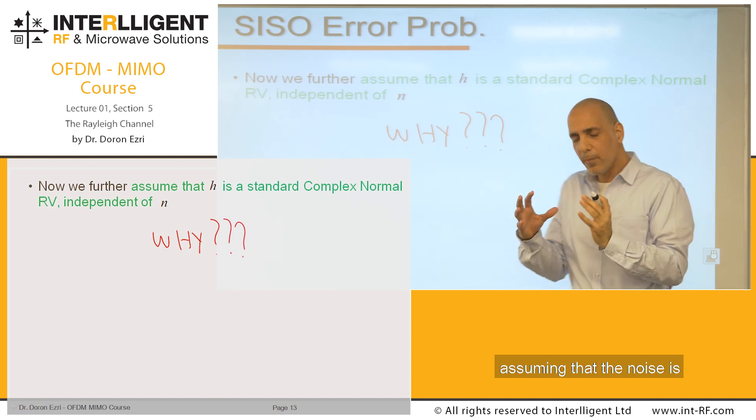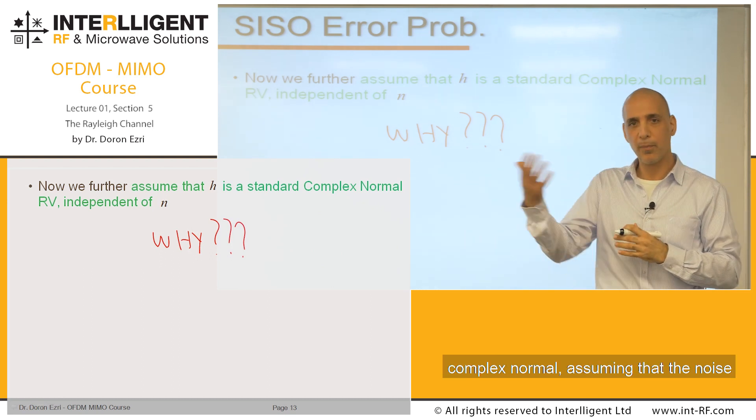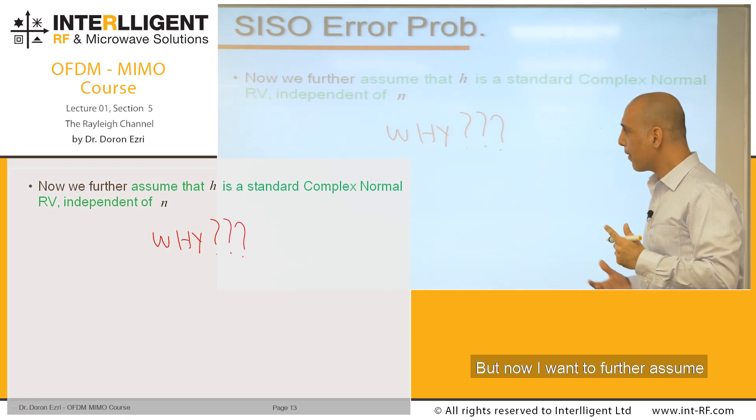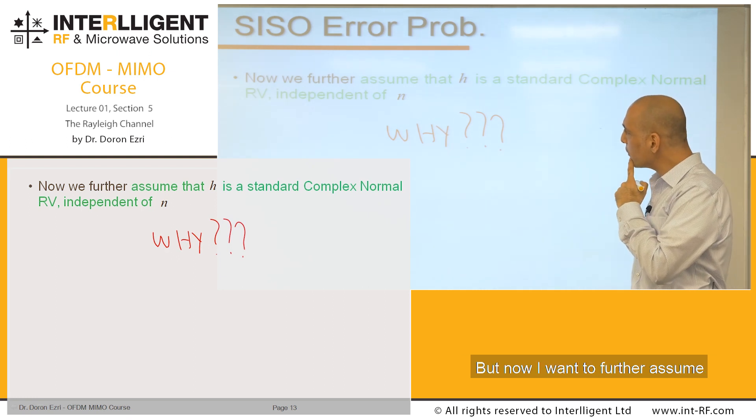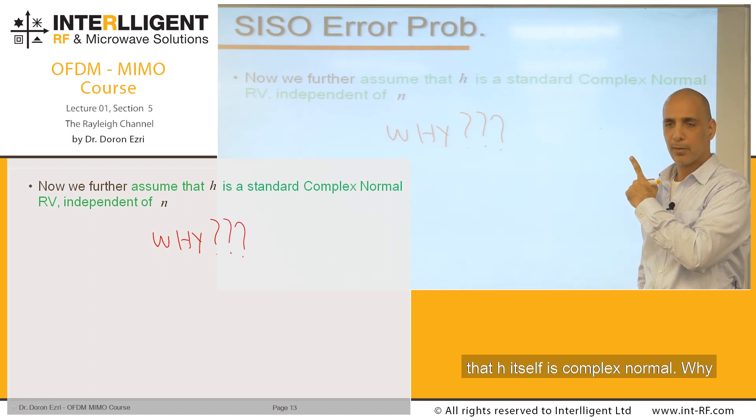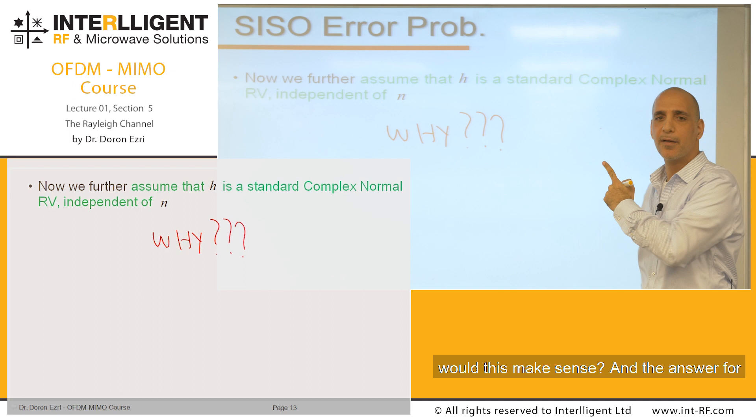Assuming that the noise is complex normal, assuming that the noise is Gaussian, this makes a lot of sense. But now I want to further assume that H itself is complex normal. Why would this make sense?